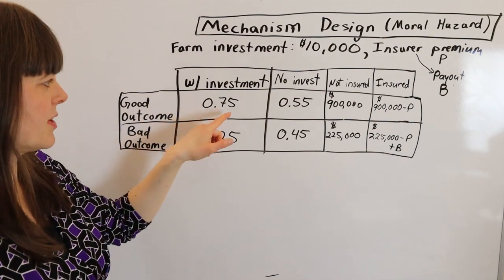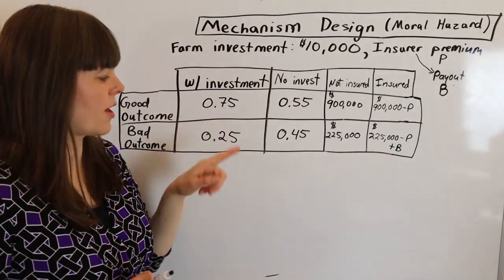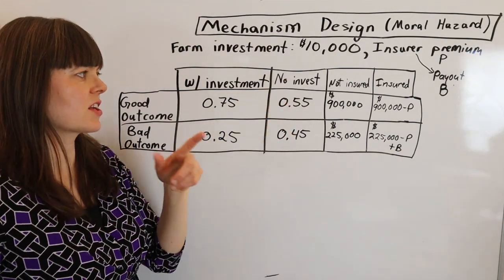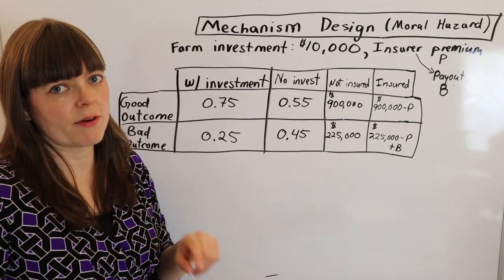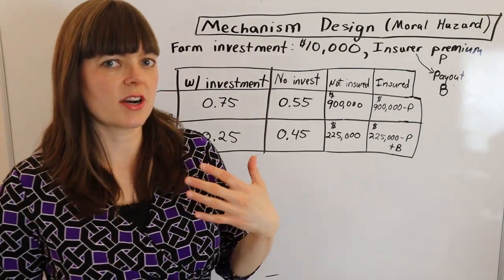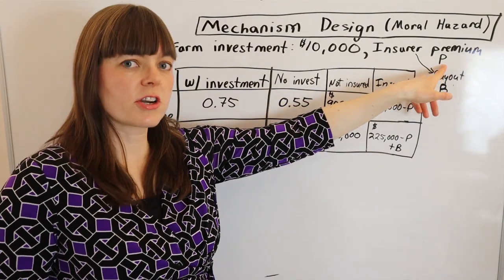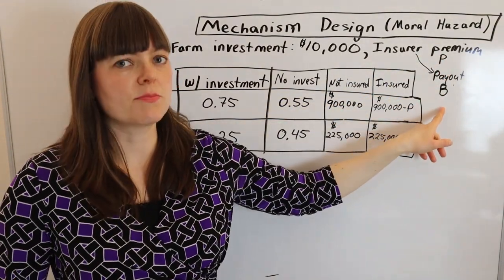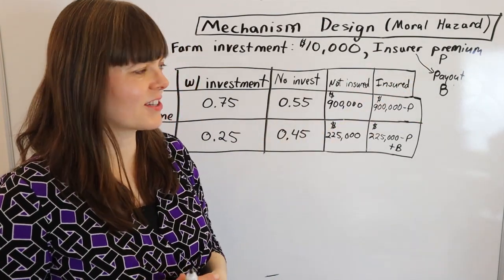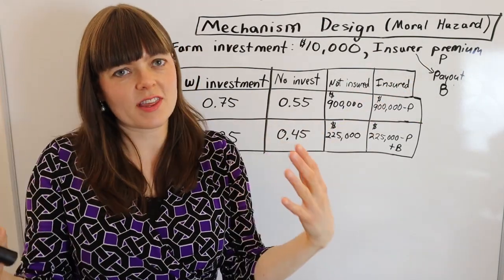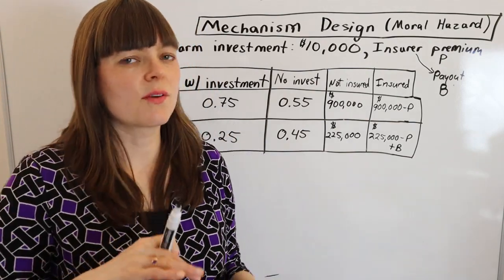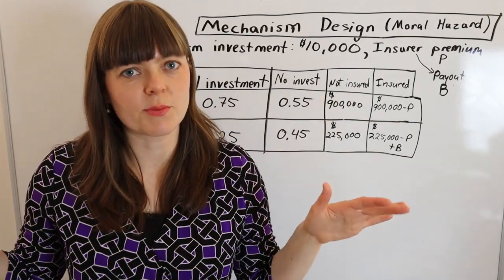The $10,000 technology investment increases the chances of a good outcome. With the investment, you have a 75% chance of a good outcome and a 25% chance of a bad outcome. Without the investment, you have a 55% chance of a good outcome and a 45% chance of a bad outcome. The insurance company is deciding what to charge as their insurance premium and what their payout should be if there's a bad outcome — those are the two choice variables for the insurer.